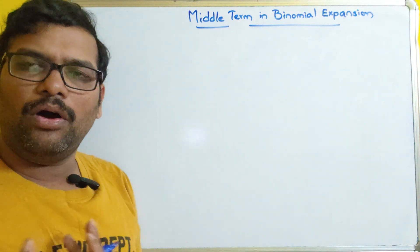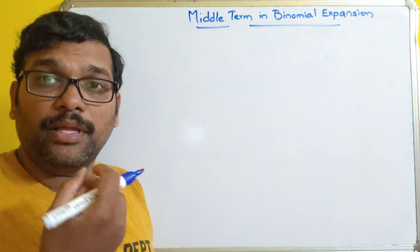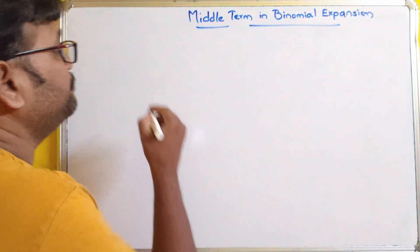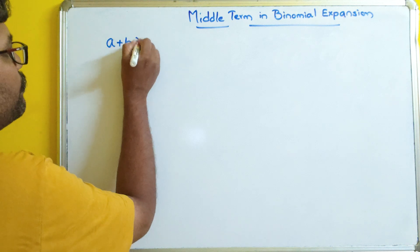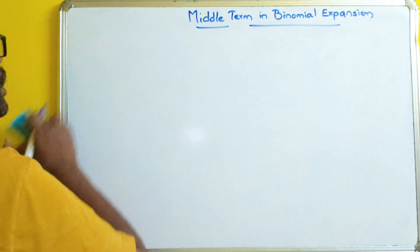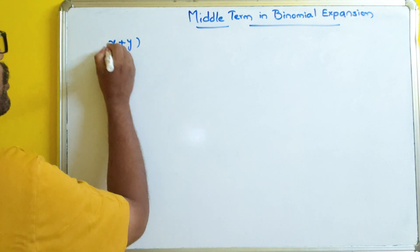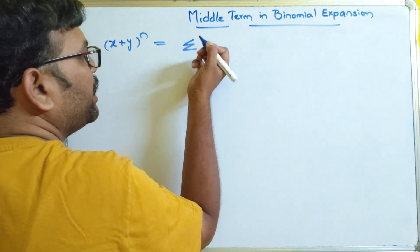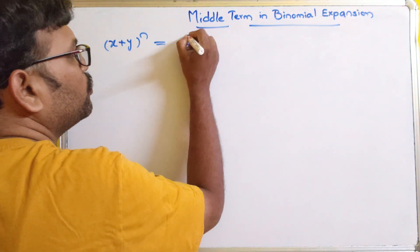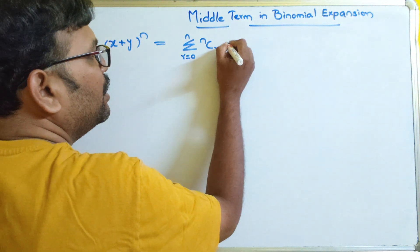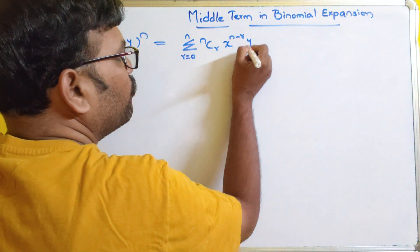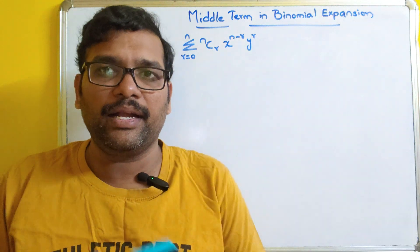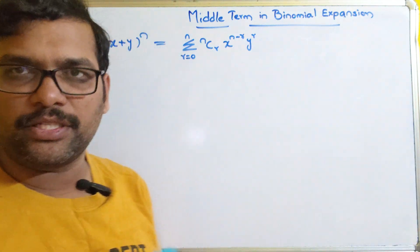Let us have a quick recall on the binomial theorem, because with the help of the binomial theorem we find the binomial expansion. For any binomial expression (x + y)^n, the binomial expansion is: sigma from r = 0 to n of nCr · x^(n−r) · y^r. This is the binomial theorem, and with this formula we directly expand the expression.